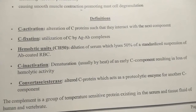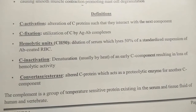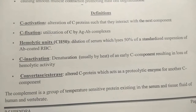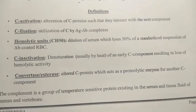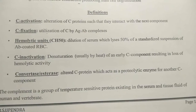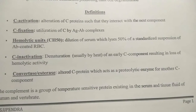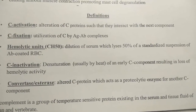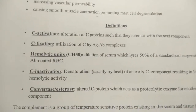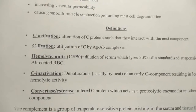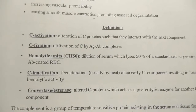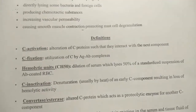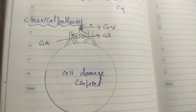Hemolytic units are related to drug interactions — for example, when a drug binds to red blood cells, it acts as a hapten, provoking macrophages and causing hemolysis. Next is complement inactivation, which is denaturation by temperature — supplying around 56 degrees Celsius results in heat inactivation of early components, causing loss of hemolytic activity. Finally, convertase or esterase is an altered complement protein where more than one subunit combines and acts as a proteolytic enzyme, breaking other proteins into functional complement components.